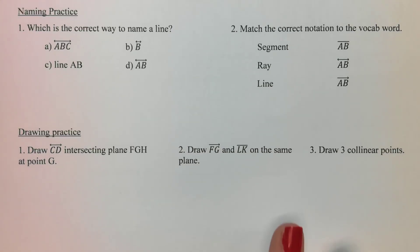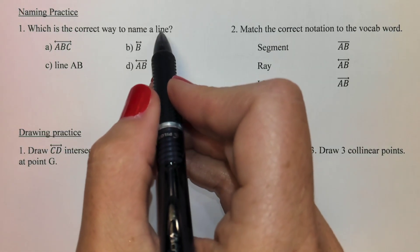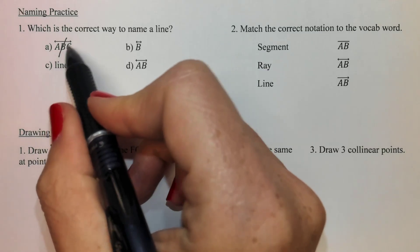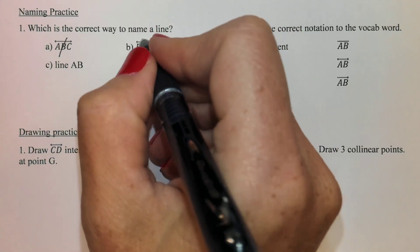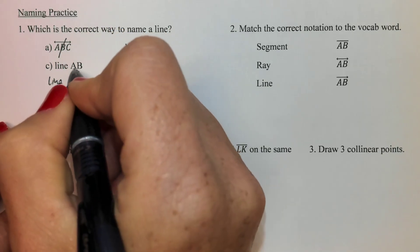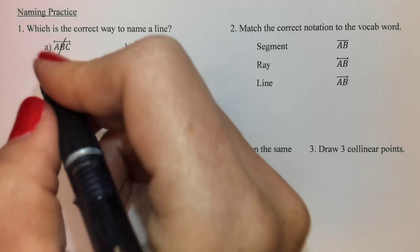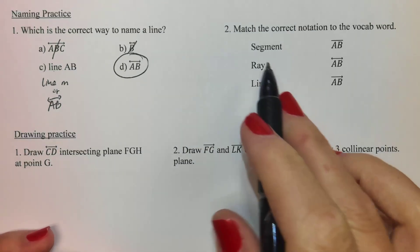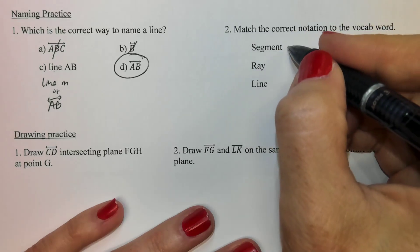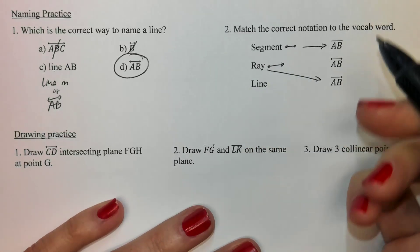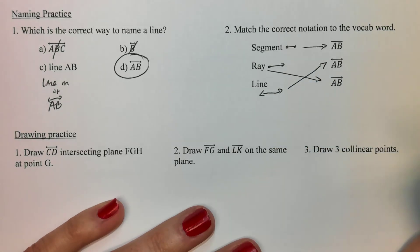A little naming practice — this is usually the part kids struggle with the most. Which is the correct way to name a line? We just want two letters. You could say line and then the little lowercase letter, or you give two letters with the line above it — that is the right choice. We don't want to combine the word 'line' and then two points. Either use the lowercase letter or just the two points with the notation above. Number two: match the correct notation with the vocab word. Segment — it ends, so dots on both ends. A ray starts and goes in one direction, so one arrow. A line goes forever in both directions, so arrows on both ends.